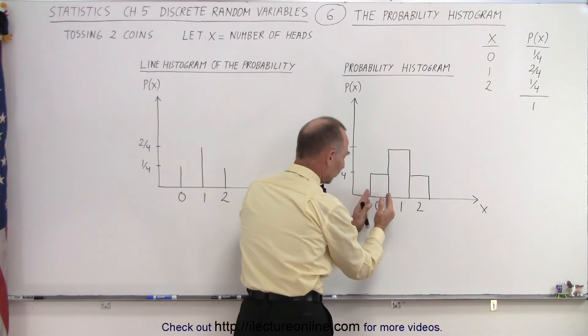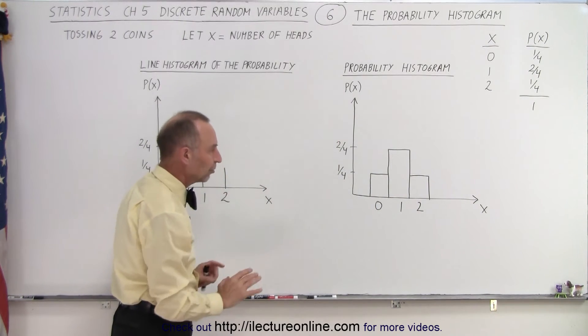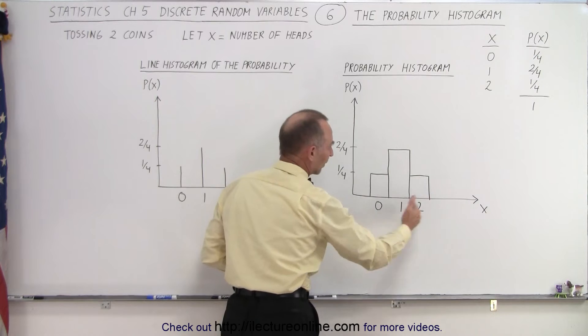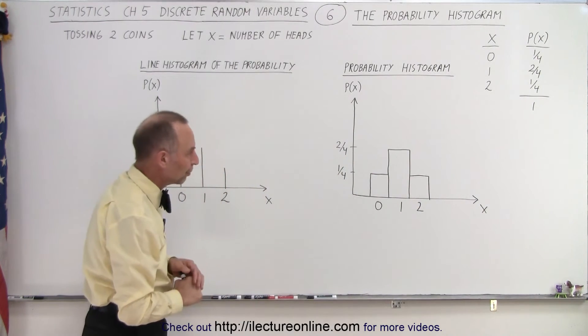Notice that 0 doesn't have to be at the origin of our graph. Sometimes it's better to move things over and show on the horizontal axis 0, 1, 2 to make it clear. It doesn't have to be right at the origin.